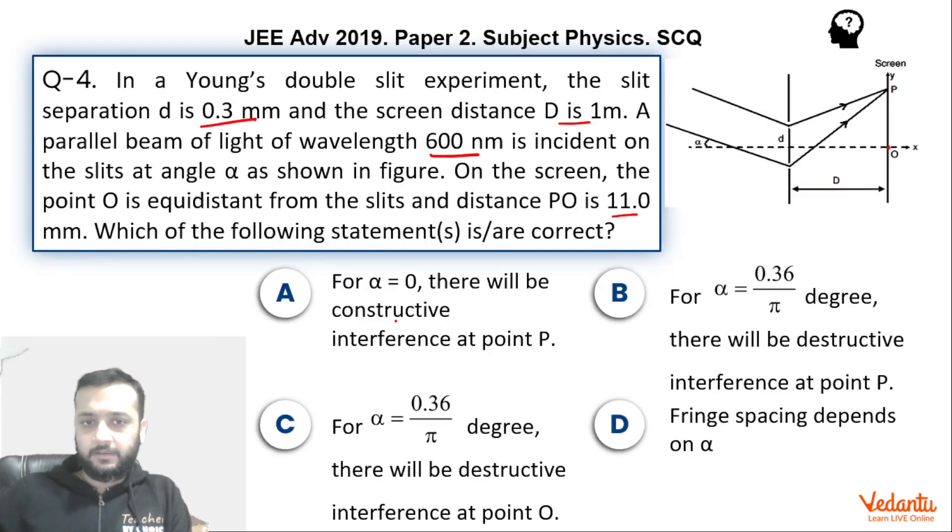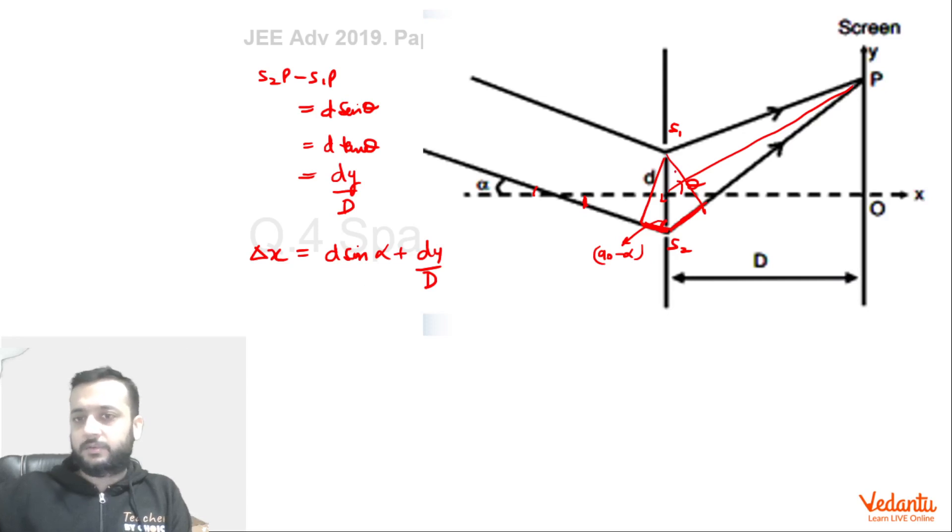Now, if you go back to the options, if alpha is zero, there will be constructive interference at point P. So if alpha is zero, then that means both these rays were coming parallel. So this will anyway become zero. And we have to talk about point P. So if you calculate this path difference for alpha equals to zero, so this d has been given as 0.3 mm. So let's convert this into meters. So we'll multiply this by 10 to the power minus 3. Y is 11 mm, so 11 into 10 to the power minus 3 divided by 1.